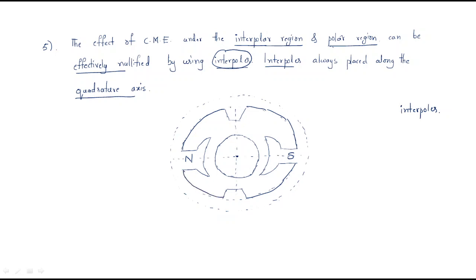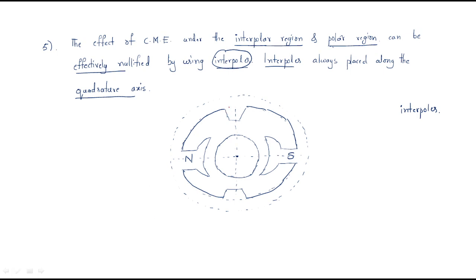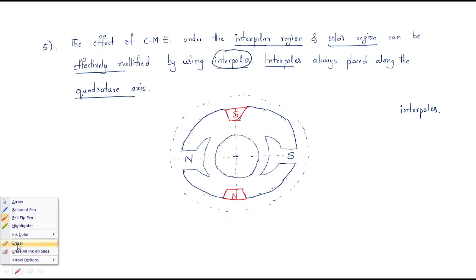Observe here — these are the interpoles. This part is the interpole, and this part is also an interpole. Generally, the north pole and south pole are connected like this, and these interpoles very effectively neutralize the cross-magnetizing effect.